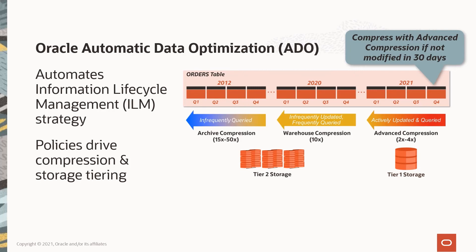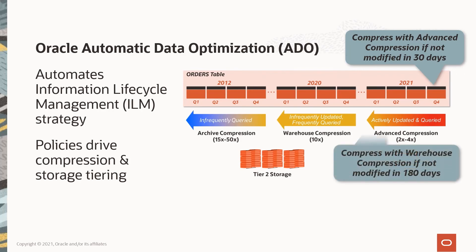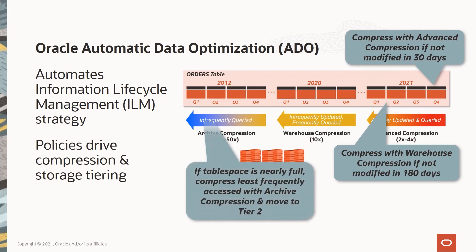Remember that heatmap tracks this information, and as the data ages we can create another policy to increase compression and save even more space. Our last policy kicks in only if we are running low on storage space — it looks for our least accessed data partition, compresses it, and moves it to a lower storage tier.